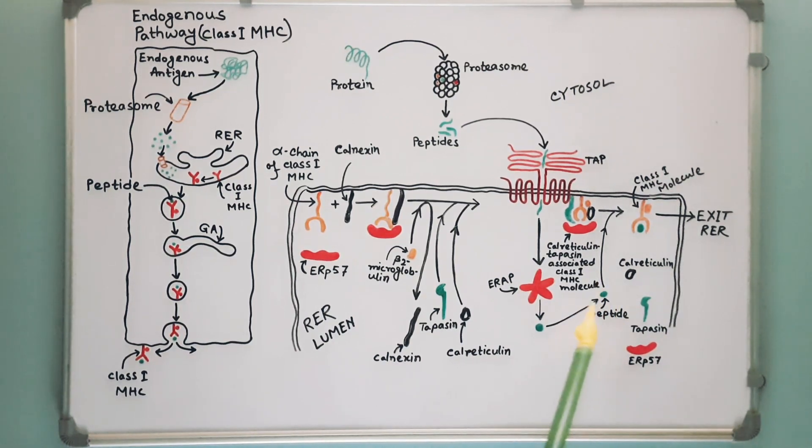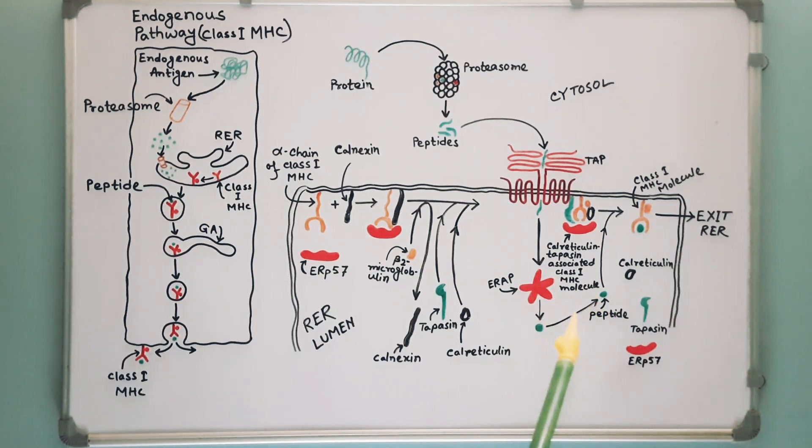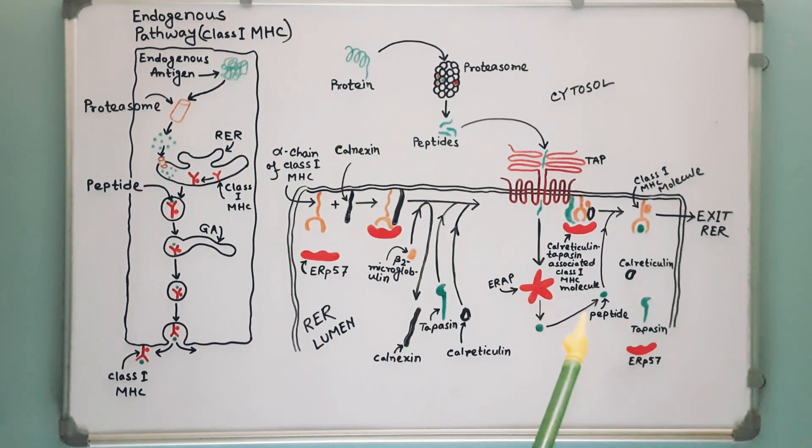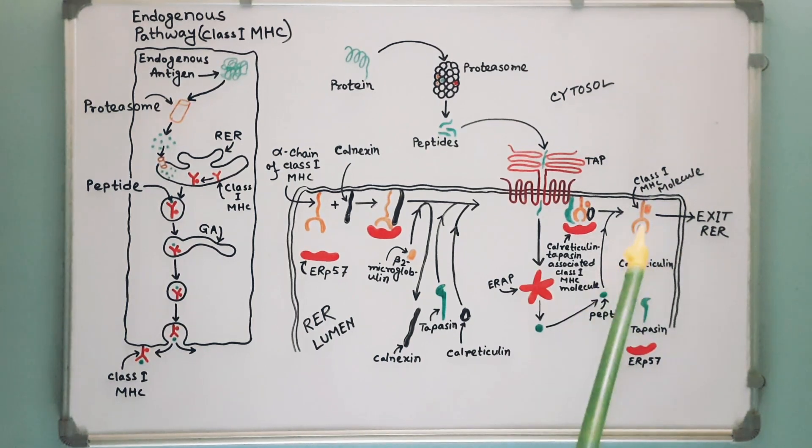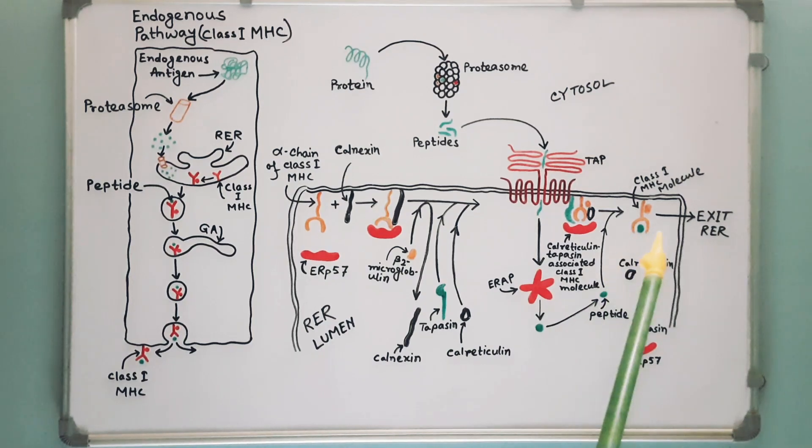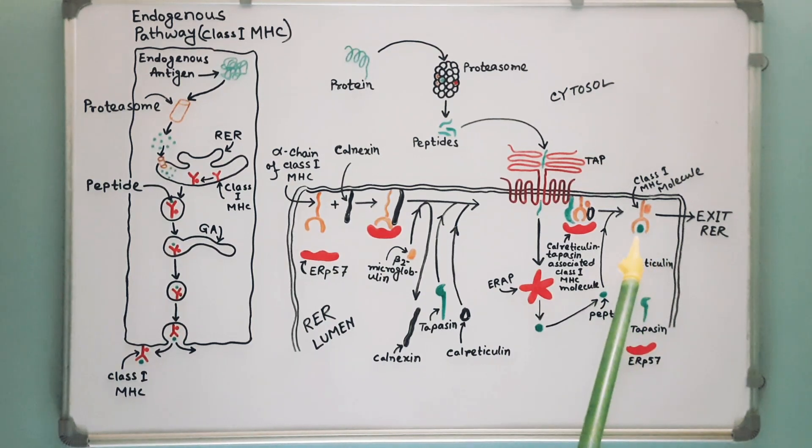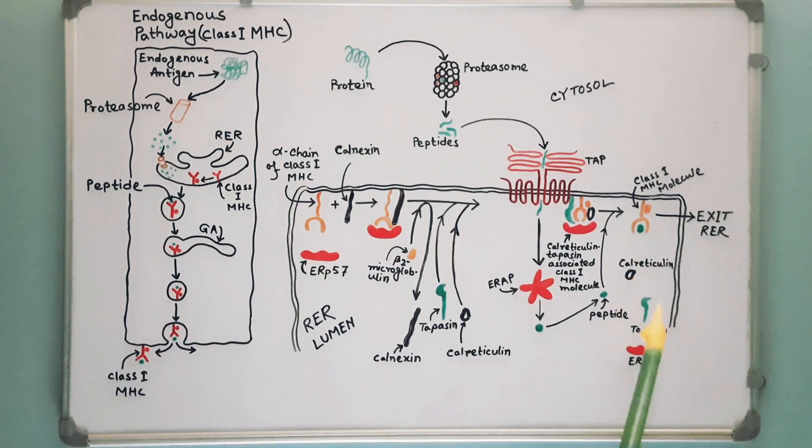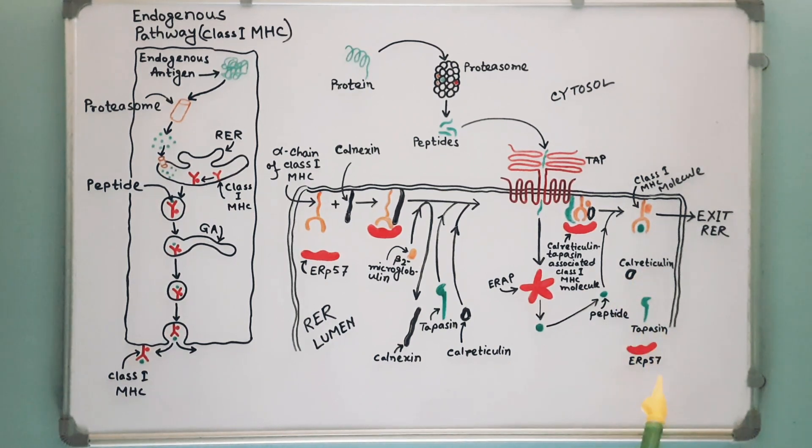ERAP1 has little affinity for peptides shorter than 8 amino acids in length. The class 1 MHC molecule binds with peptide and displays increased stability and can dissociate from the complex with calreticulin, tapasin and ERP57.